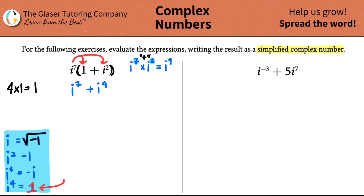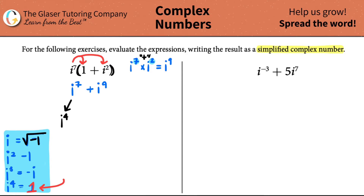Four times one is four. I can't overshoot my target number. If I have i to the fourth, how many more do I need to reach seven? I need three more, because four plus three is seven. So i to the seventh is the same as i to the fourth times i to the third. Then for i to the ninth: four times two is eight, and I can't overshoot, so I need two i to the fourths, plus i to the ninth still needs one more.